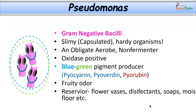Coming to Pseudomonas, it is a short gram negative bacillus. Medically important Pseudomonas genus consists of about 10 important species which can cause infections in human beings. They have a mild polysaccharide capsule, which is why sputum in cystic fibrosis patients is very sticky or slimy. Pseudomonas is the most important causative agent in cystic fibrosis.